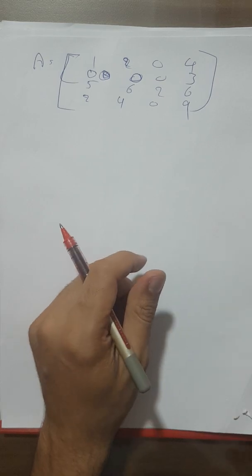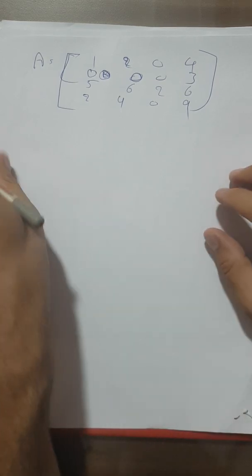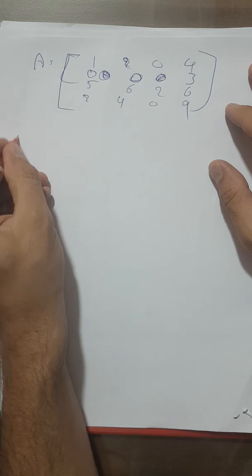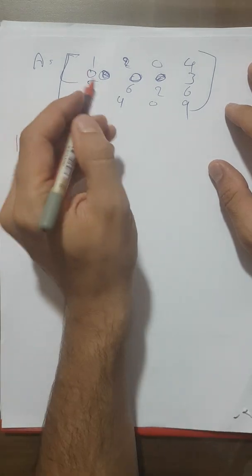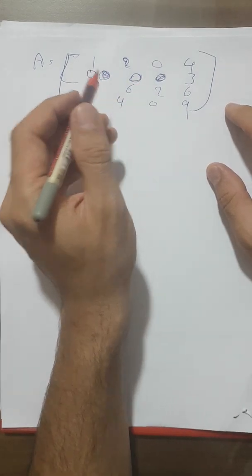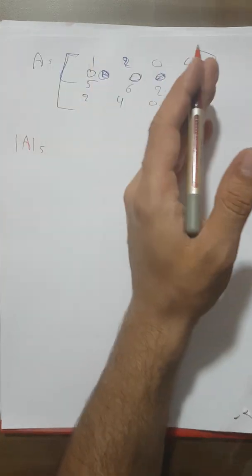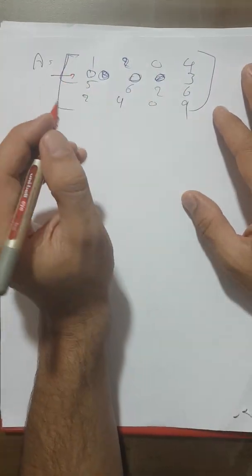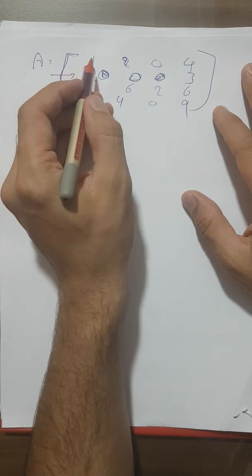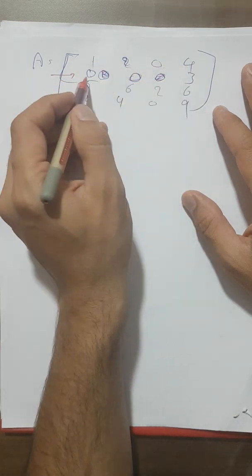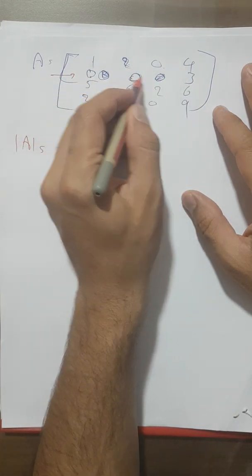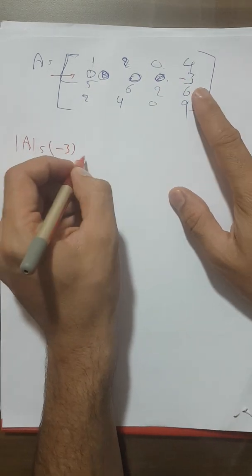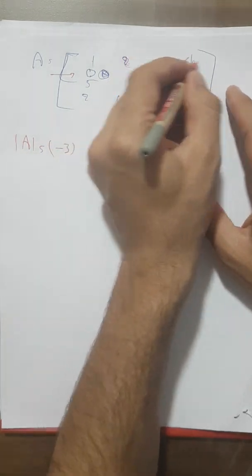Start your minor or cofactor expansion with the zeros. If you use a zero, zero times anything is removed. That's why it's best to use the row containing zeros — for example the second row — as your expansion row. Remember the sign pattern: positive, negative, positive, negative. Don't forget about the minus signs, and the rest of the terms will be cancelled or simplified.